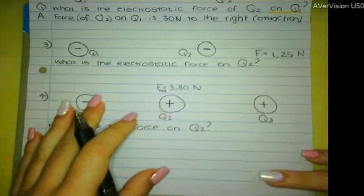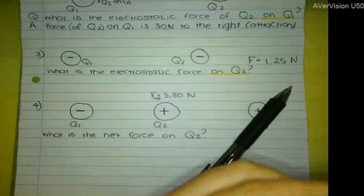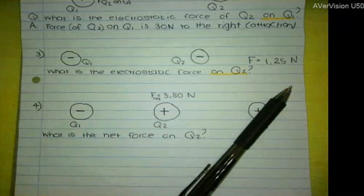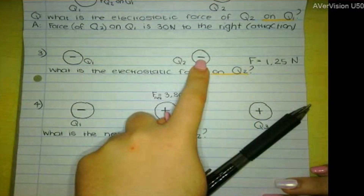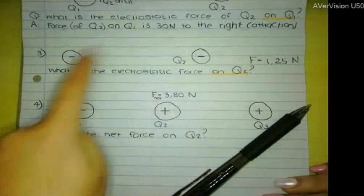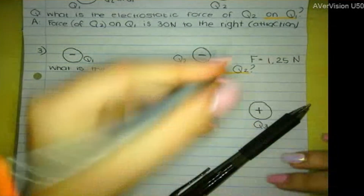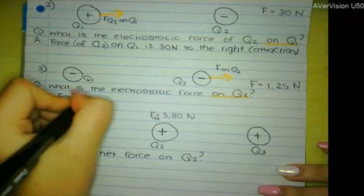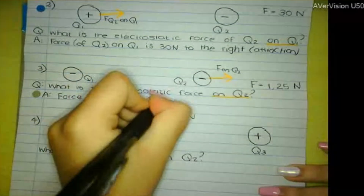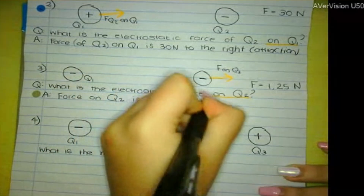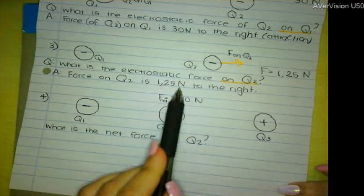Number three: what is the electrostatic force on Q2? Both Q1 and Q2 are negative — like charges. So Q2 is not going to go towards Q1; it'll try to get away. So it'll go to the right. The force on Q2 is 1.25 newtons to the right. Again, force is a vector — you need a magnitude and a direction.